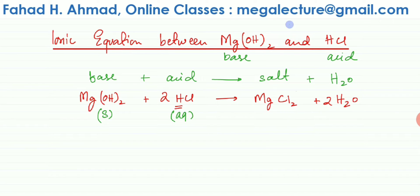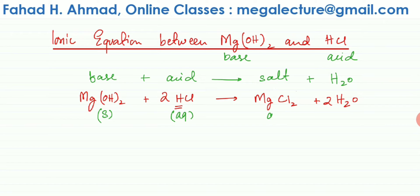Moving to chlorides: all chlorides are soluble except silver, lead, and mercury. So magnesium chloride MgCl₂ is soluble and will be in the aqueous state. H₂O is a liquid. That completes Step 1.